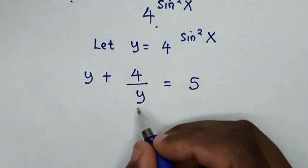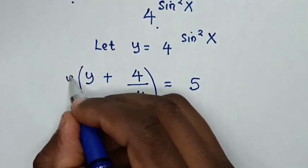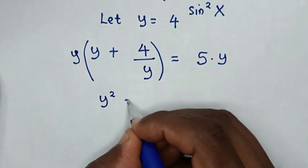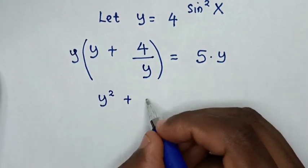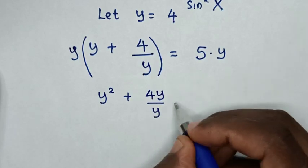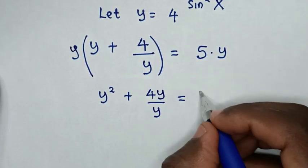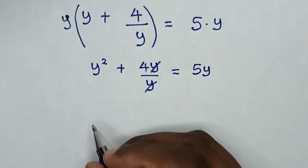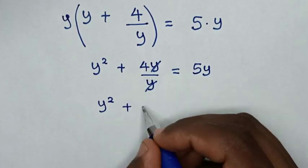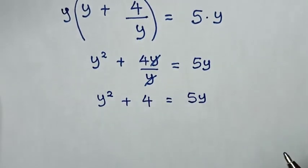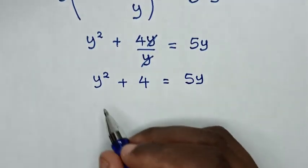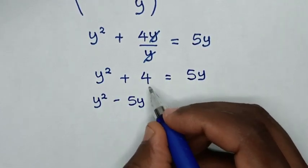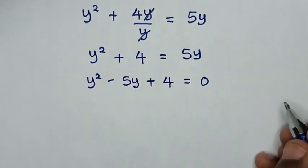To remove this fraction, we multiply both sides by y. So our equation becomes y times y is y squared, plus y times 4 over y — the y cancels — giving 4, equal to 5y. Taking 5y to the left side: y squared minus 5y plus 4 is equal to 0.